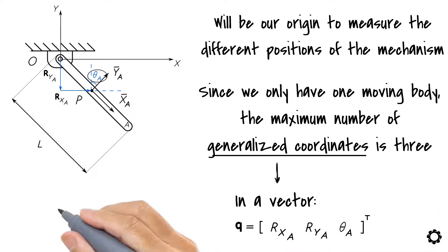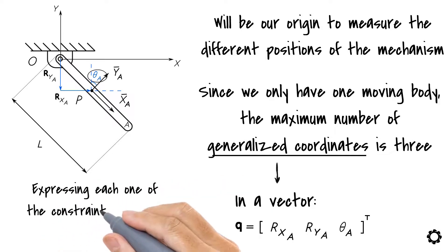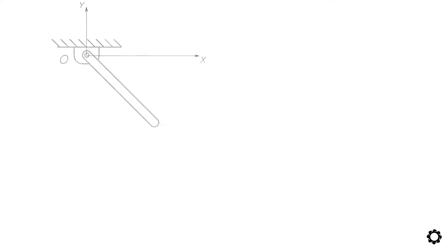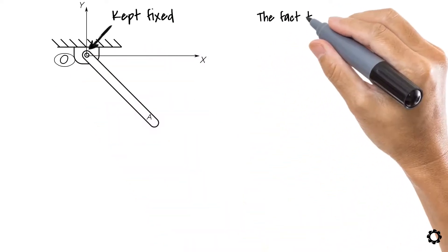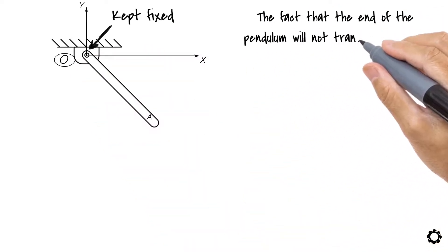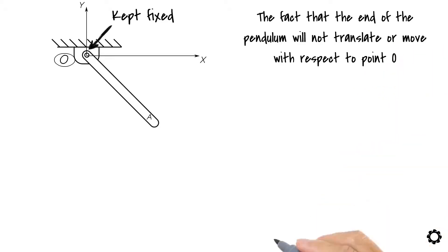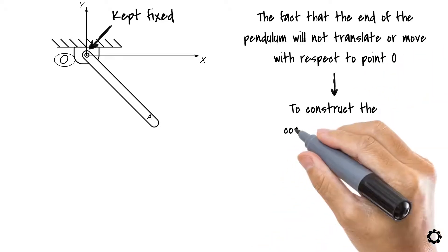Our next step consists of expressing each one of the constraints in words before doing it mathematically. Just try to understand the problem. Let's do it. The characteristic of the pendulum is that it rotates around point O. It means that the end of the pendulum is kept fixed on top of the point O. The fact that the end of the pendulum will not translate or move with respect to the point O is the foundation to construct the constraint equation.